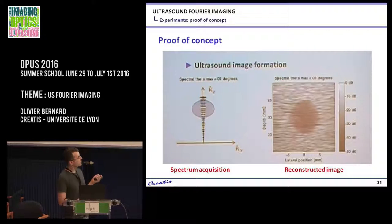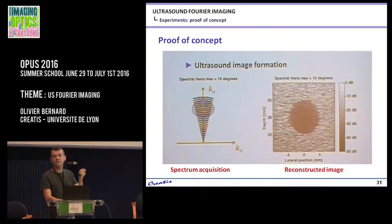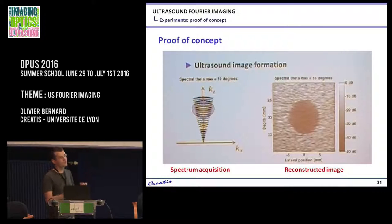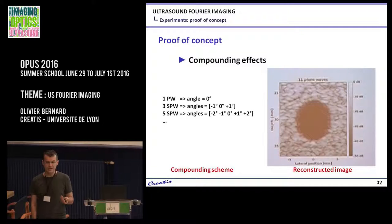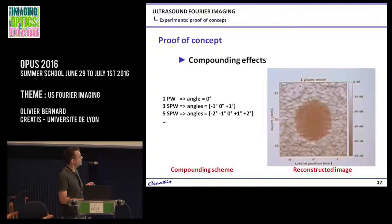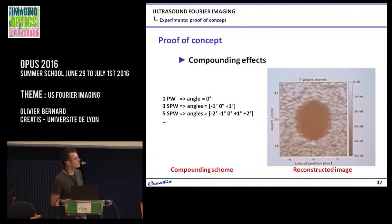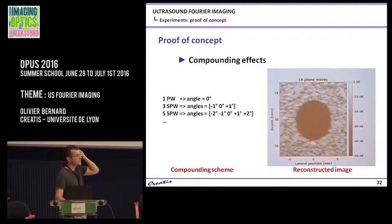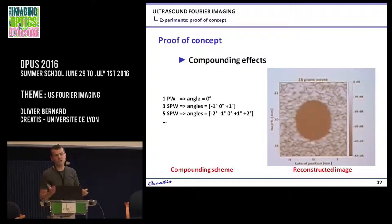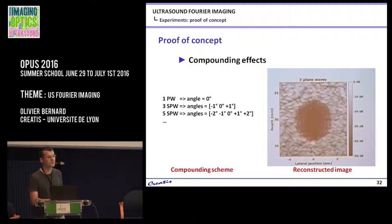We can also do compounding — instead of using a single plane wave perpendicular to the probe, you can emit several steered plane waves and apply the summation. This illustrates the interest of using steered plane waves. Each image I reconstruct uses a different number of plane waves in emission, while in reception I use the full densified spectrum. You can see the evolution and the trade-off: do you want the best image quality, or very fast acquisition?